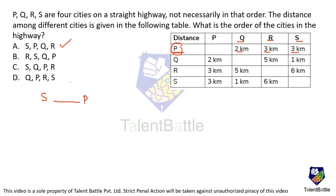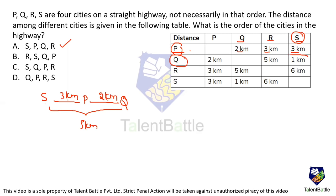So S then P — the distance from S to P is 3 km. Next, Q should come after P. The distance from P to Q is 2 km. Now let's check whether the distance from S to Q is satisfied. Three km plus two km gives a total of 5 km. But according to the table, S to Q (same as Q to S) is only 1 km, not 5 km. That means our assumption is wrong.